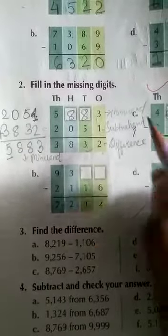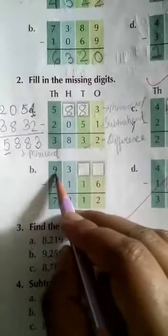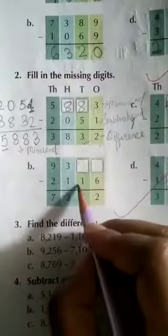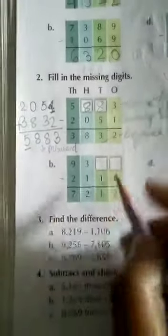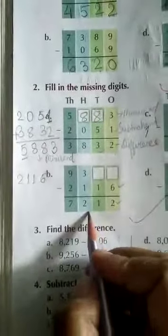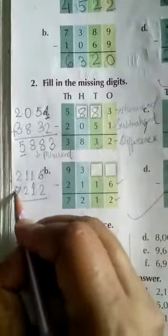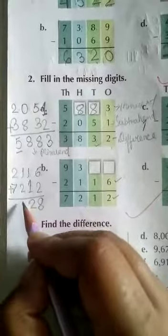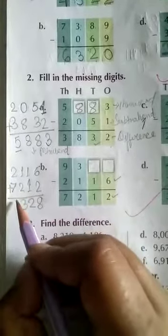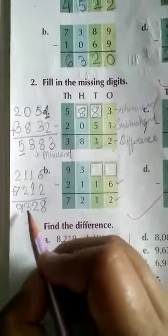Now again I am showing you B number. Here you see 9, 3, dash, dash given. But here subtrahend and difference is given. So what we are going to do? We are going to add subtrahend and difference. So at first we are going to write 2, 1, 1, 6. Now we are going to add 7, 2, 1, 2. Now you add these 2 digits. 6 plus 2 is 8, 1 plus 1, 2, 1 plus 2, 3, and 2 plus 7, 9. Is it clear?